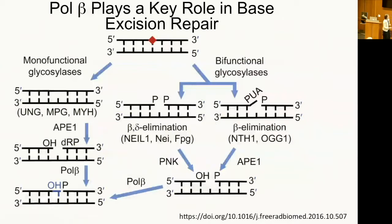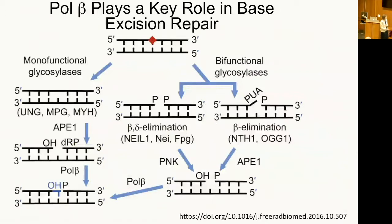Pol beta functions in base excision repair, a very important cellular process that mainly removes small base damage through either a monofunctional or bifunctional glycosylase pathway. Monofunctional glycosylases remove the base, leaving an abasic site which is incised. The backbone is then incised by AP endonuclease, leaving a single nucleotide gap with a three-prime hydroxyl and a five-prime phosphate. That five-prime phosphate is what's removed by Pol beta, which then fills in the gap, and then ligase seals the nick.